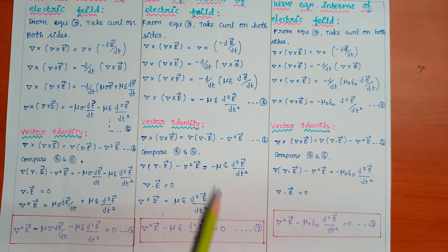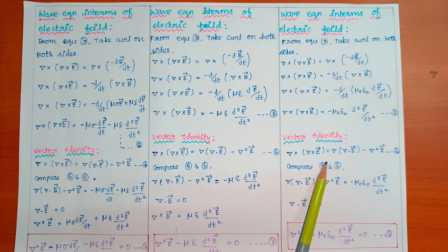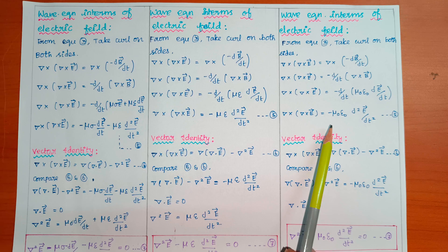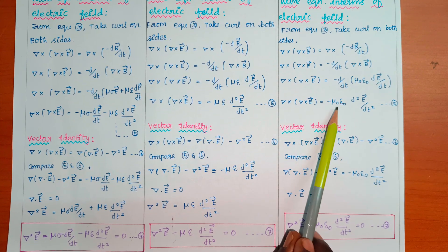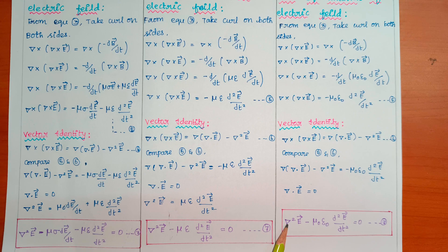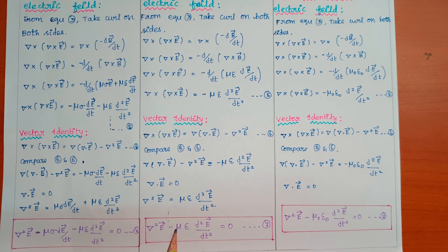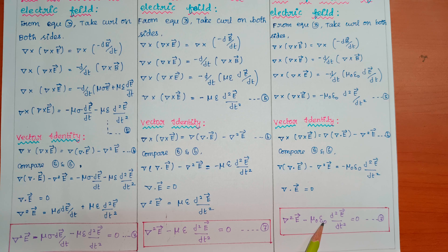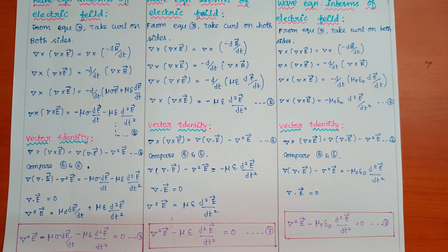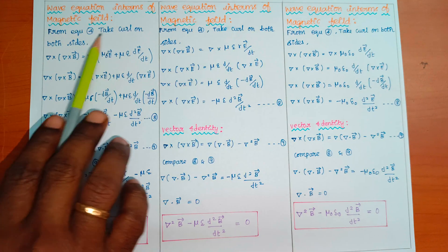Since del dot E equal to zero, we get del square E equal to mu epsilon dou square E by dou t square. This is the wave equation in terms of electric field for dielectric medium (Equation 7). For free space or vacuum, the equation is the same but with mu replaced by mu naught and epsilon replaced by epsilon naught.